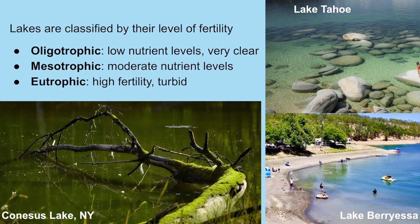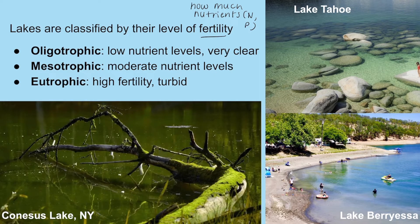Lakes are also classified by their levels of fertility — how many nutrients, specifically nitrogen and phosphorus. An oligotrophic lake has low levels of nutrients and is really clear, like Lake Tahoe where you can see pretty far into the water. A mesotrophic lake has moderate nutrient levels. A eutrophic lake has high fertility with lots of nutrients, and it's turbid — lots of particles in the water make it difficult to see through.